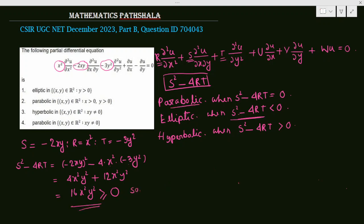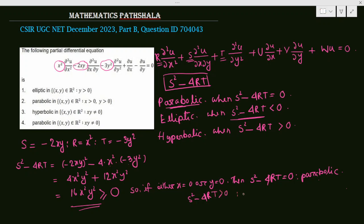So S² - 4RT = 16x²y², which is always greater than or equal to 0 — it cannot be less than 0. If either x = 0 or y = 0, then S² - 4RT = 0, which means the equation is parabolic. Otherwise, S² - 4RT > 0, which means the equation is hyperbolic.